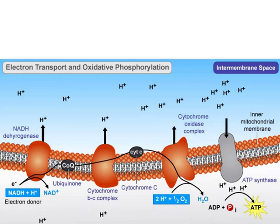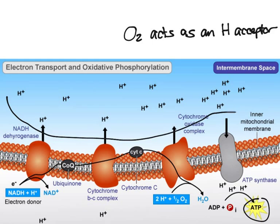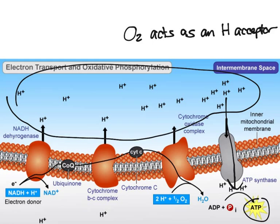Oxygen acts as a hydrogen acceptor. Once a hydrogen gradient is established — with a lot of hydrogens on one side — the hydrogen gets pumped through the molecule called ATP synthase, and it turns ADP and phosphate into ATP.